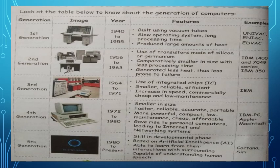2nd Generation Computers, 1956 to 1963: These used transistors made of silicon, were comparatively smaller in size with less processing time than 1st generation computers, generated less heat, and thus had less failure. Examples include IBM 1400, 7000 series, and IBM 350 series.